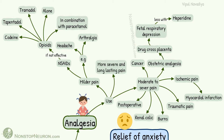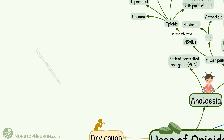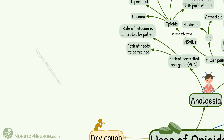For more severe and longer lasting pain, NSAIDs are given along with opiates. This combination is super-additive and decreases the required dose of opiates. Now there is a technique called patient-controlled analgesia. In this, the rate of infusion is controlled by the patient. The patient needs to be trained, but chances of dependence are less with this. Fentanyl is commonly used for this.